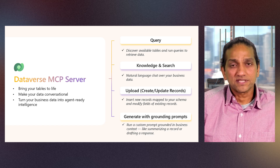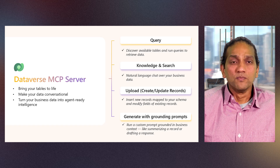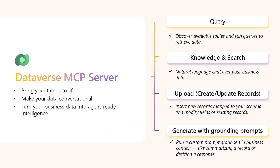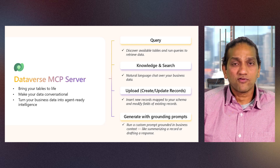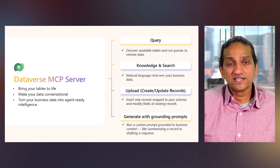Let's dive a bit deeper on the Dataverse MCP server. Imagine the opportunity to build the next generation of agents grounded not just in your structured and unstructured data, but also in your enterprise knowledge or index data. With the Dataverse MCP server, you can bring your tables to life, run queries to discover available tables, explore schema, and retrieve real-time business data. Make your data conversational by using natural language to chat with your records or search knowledge sources for grounded answers. Need to act on that data? Create new records or update existing ones with ease using structured tools that turn business data into agent-ready intelligence. And when context matters most, run custom prompts like summarizing a customer record or drafting a follow-up response, all grounded in your data. It's no longer theoretical. The tools are here.